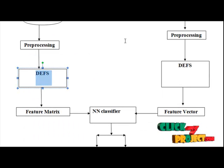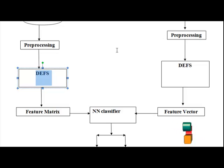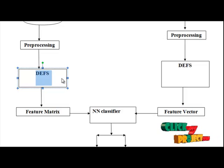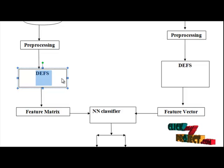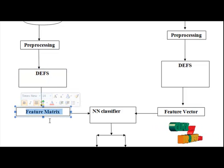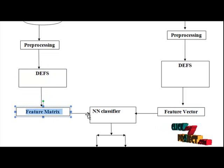Many parameters are contained in our dataset. The best parameters are selected with the help of the DEFS algorithm — Differential Evolution Feature Selection algorithm. The features are then constructed into a feature matrix and trained with our neural network classifier.